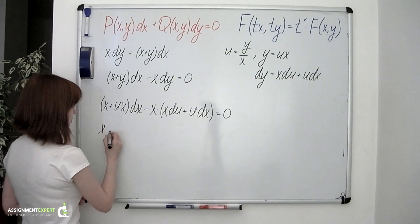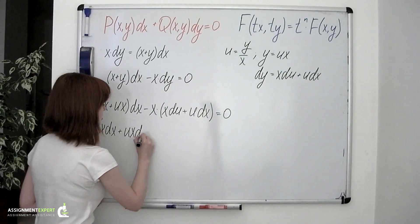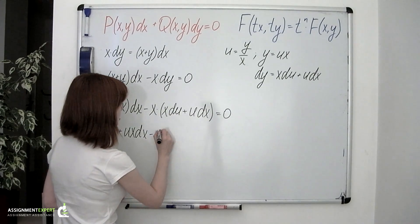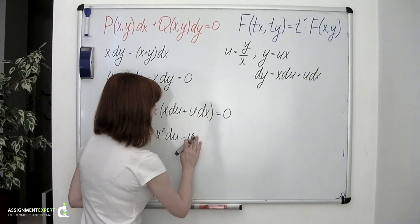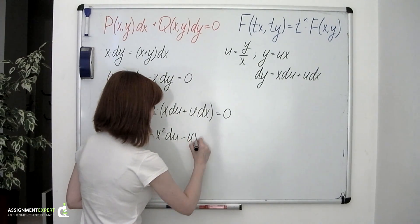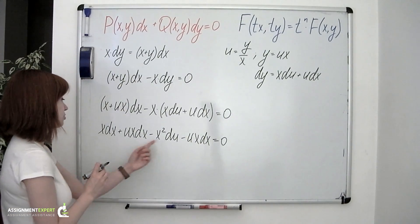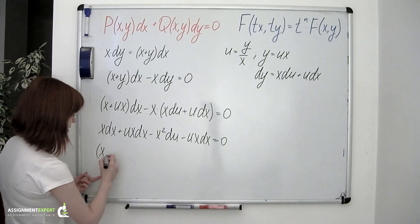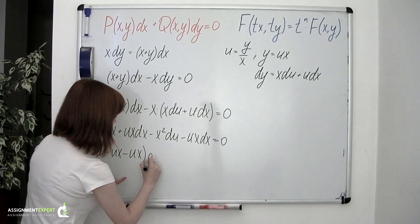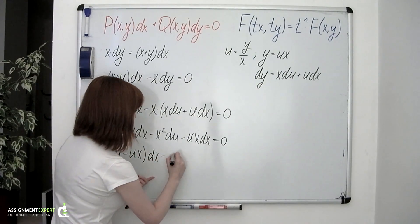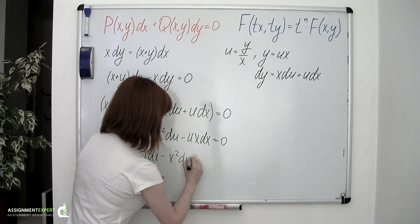Opening the brackets, we'll have x times dx plus u times x times dx minus x squared times du minus u times x times dx equals 0. So we can factor out dx, so we'll have x plus u times x and then minus u times x dx minus x squared times du equals 0.